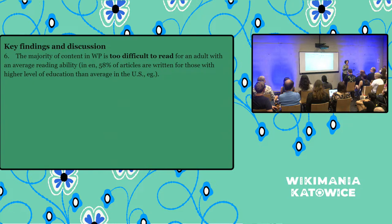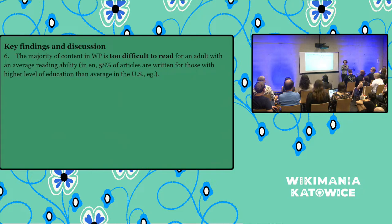One finding is that the majority of content in Wikipedia is too difficult to read for an adult with average reading ability. In English Wikipedia, almost 60% of the articles are written for those with higher levels of education than what an average United States person can read. This is something to ponder on as we are writing content.